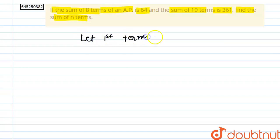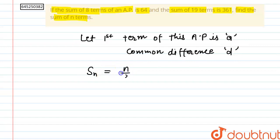Now here, let first term of this AP is A and common difference is D. Then we can say that Sn, i.e. sum of n terms, will be n by 2 into 2a plus n minus 1 D.